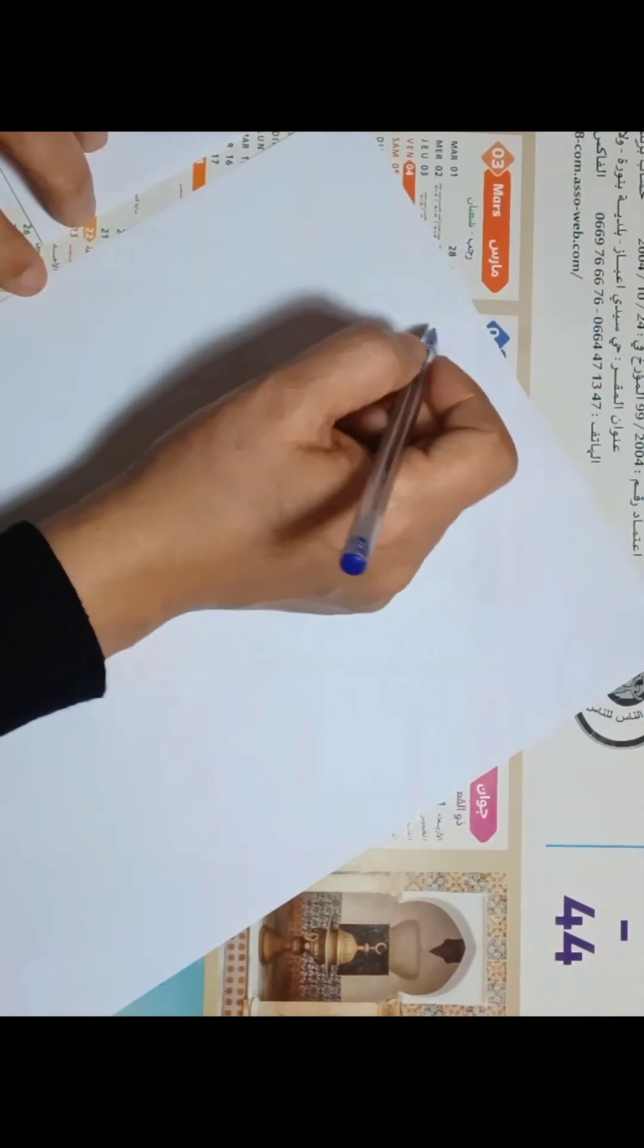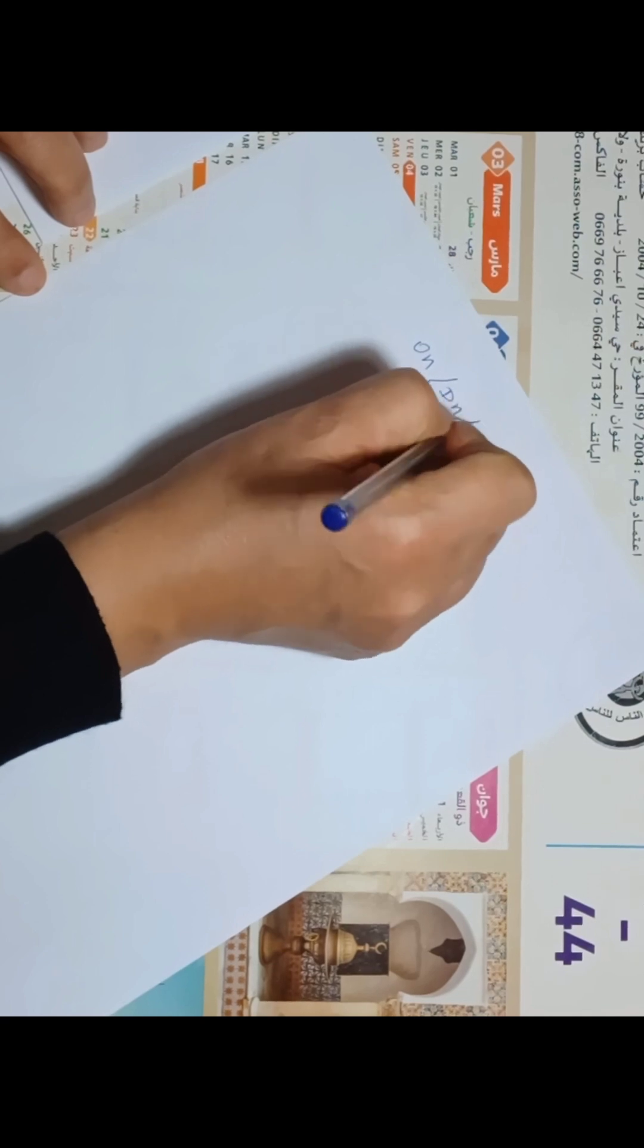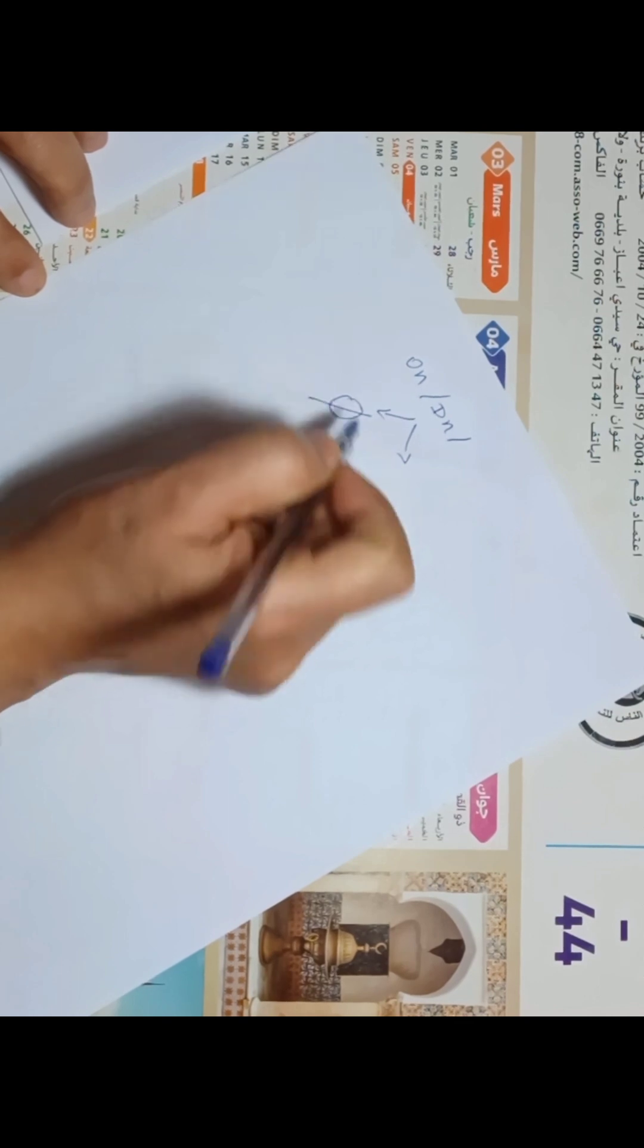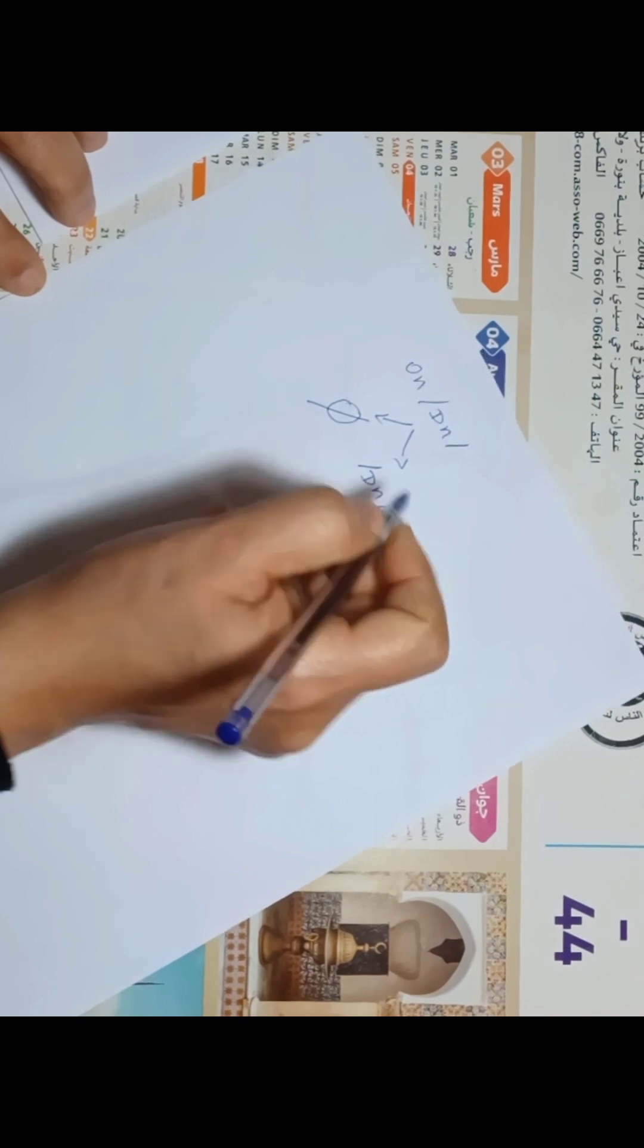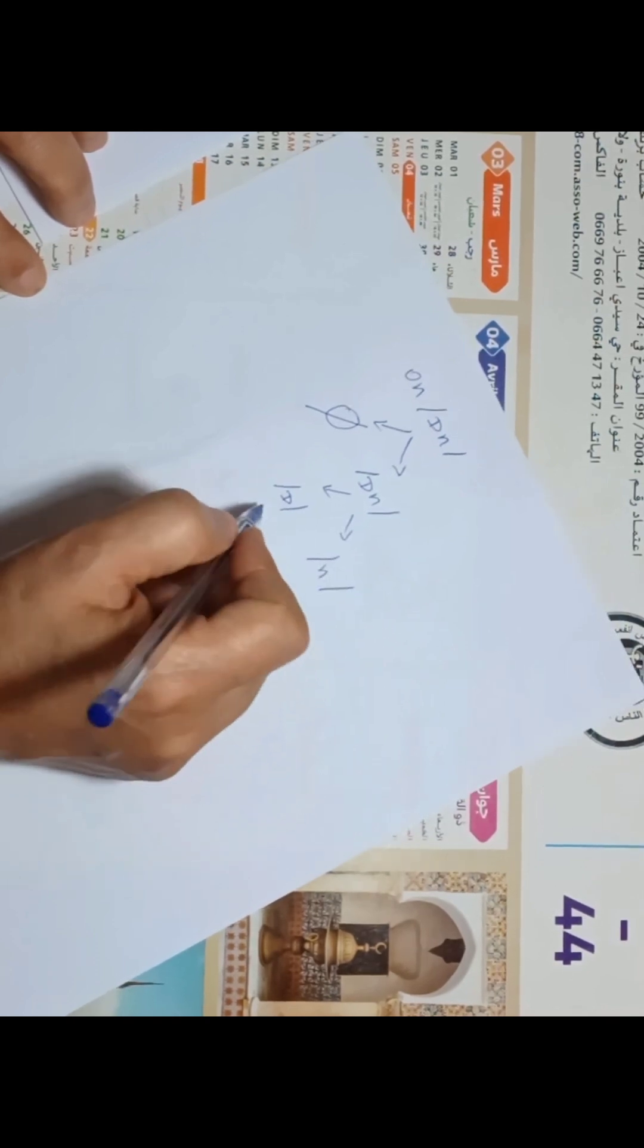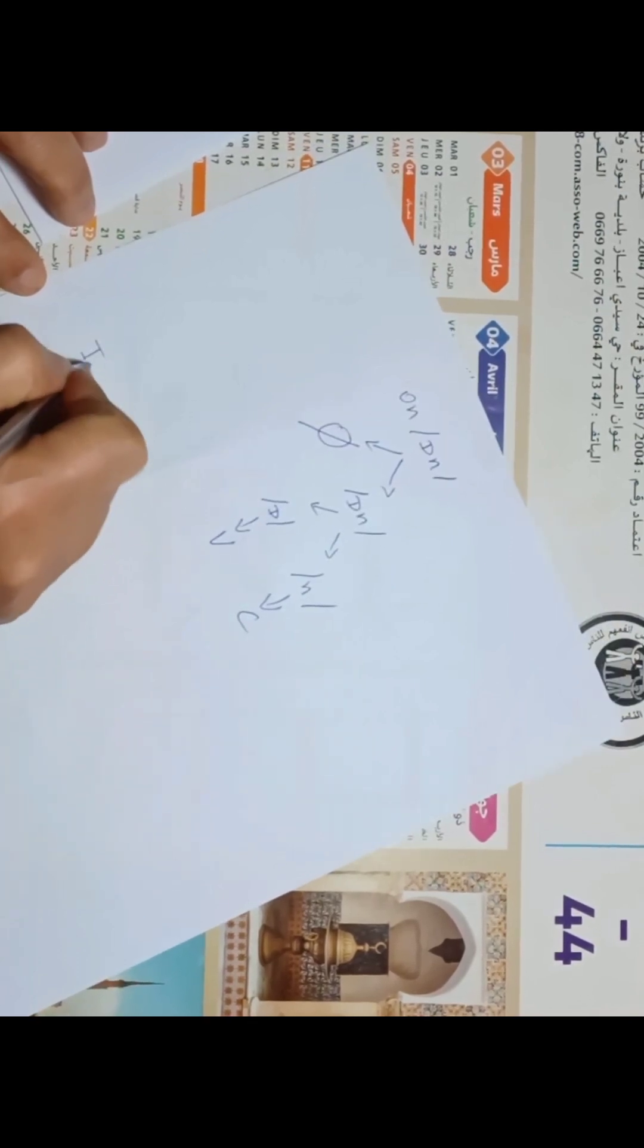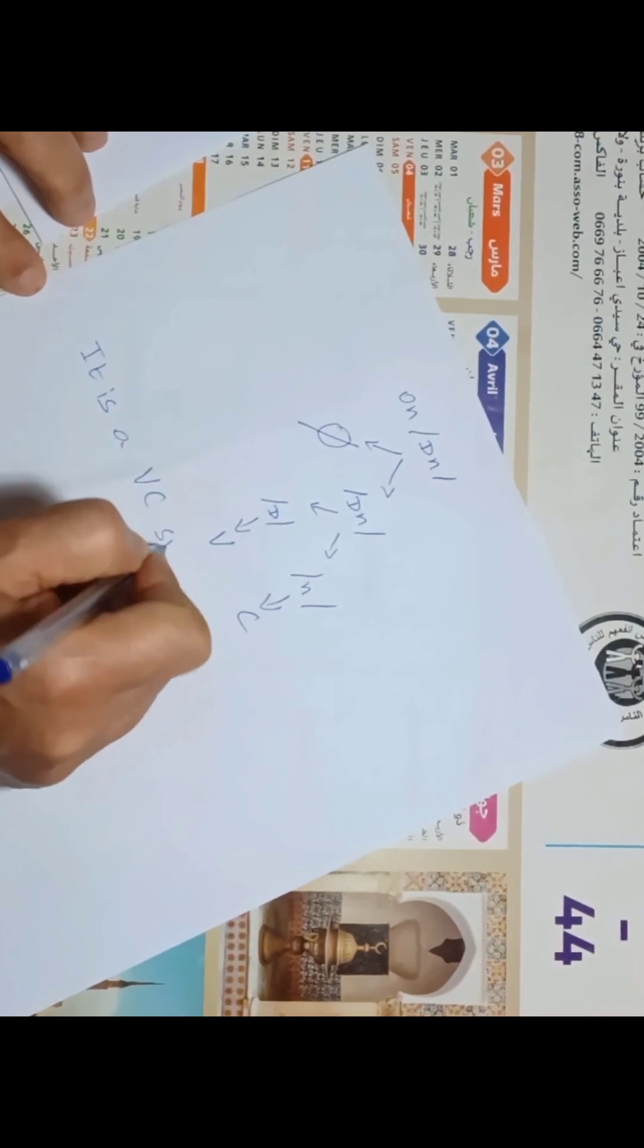Let's take another example: 'on'. Here we don't have an onset - we have zero onset. We have the rhyme /ɒn/, which is composed of the vowel sound /ɒ/ and the coda /n/. So here we have vowel sound, consonant sound. It is a VC syllable.